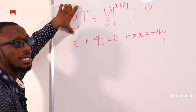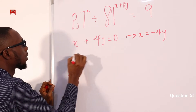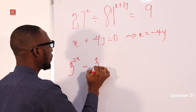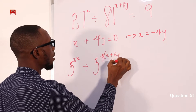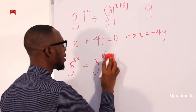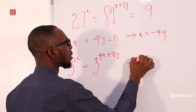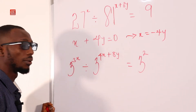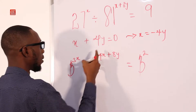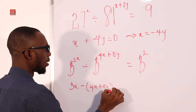27 means 3 raised to power 3, so 27 to the X is 3 raised to power 3X. 81 is 3 raised to power 4, into brackets X plus 2Y, giving 4X plus 8Y. Equals 3 raised to power 2. Divide means minus, so we have 3X minus (4X plus 8Y) equals 2.